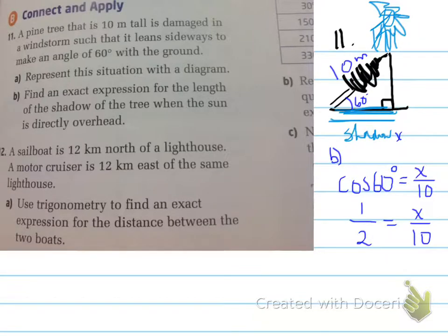So you set it up, the equation, so that it's 1 over 2 is equal to x over 10. Continuing on, you cross multiply and solve, and you find out that x equals 5. Therefore, the tree's shadow is 5 meters.